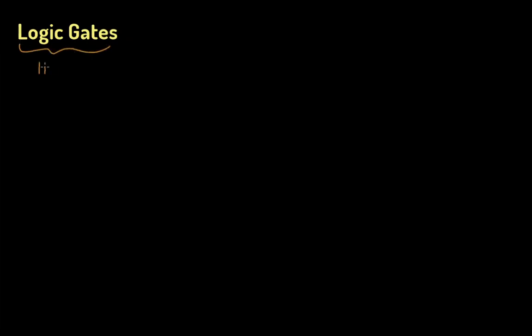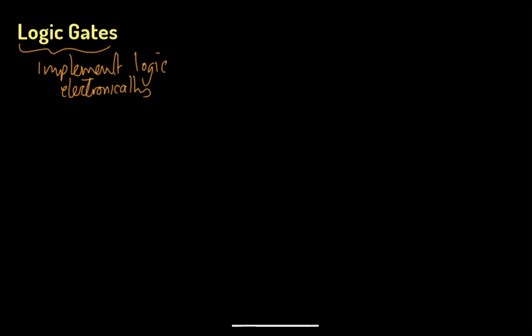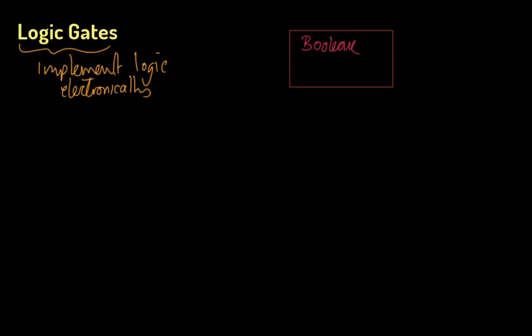Logic gates electronically implement logic. Imagine you've got a box, and inside that box there's some electronic jiggery-pokery which implements Boolean operations. During this course so far we've seen three different Boolean operations.